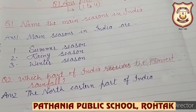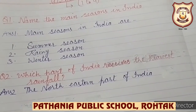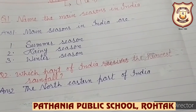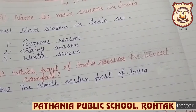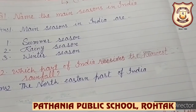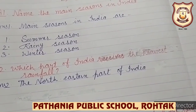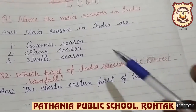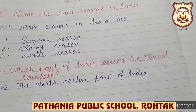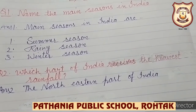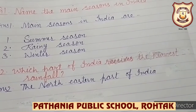Question number 1: Name the main seasons in India. As you know, children, that the physical features vary from place to place. This is the reason that we have different types of climate in different parts of the country. Some parts are extremely cold, some are extremely hot. So the main seasons in India are summer season, rainy season, and winter season. You have to write this answer.